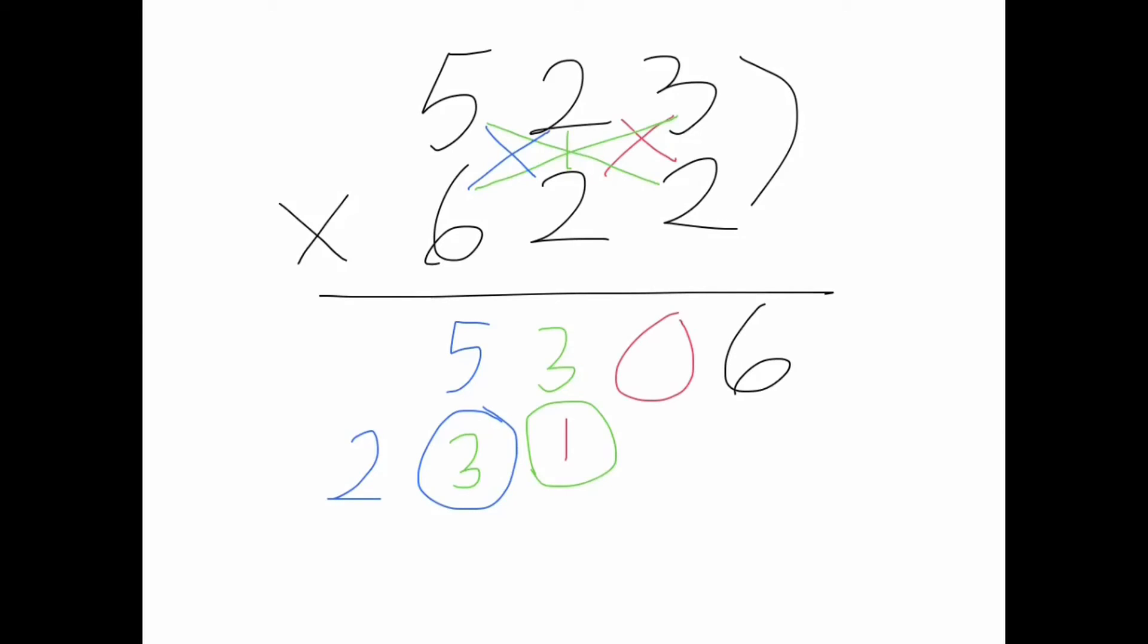And finally, 6 times 5 is 30, plus here, 32. And there's your answer.